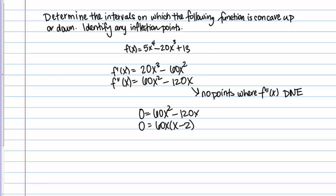Then, of course, to finish solving it, we just need to set each factor equal to 0. We get 60x equals 0 and x minus 2 equals 0. We end up with solutions of x equals 0 and x equals 2.